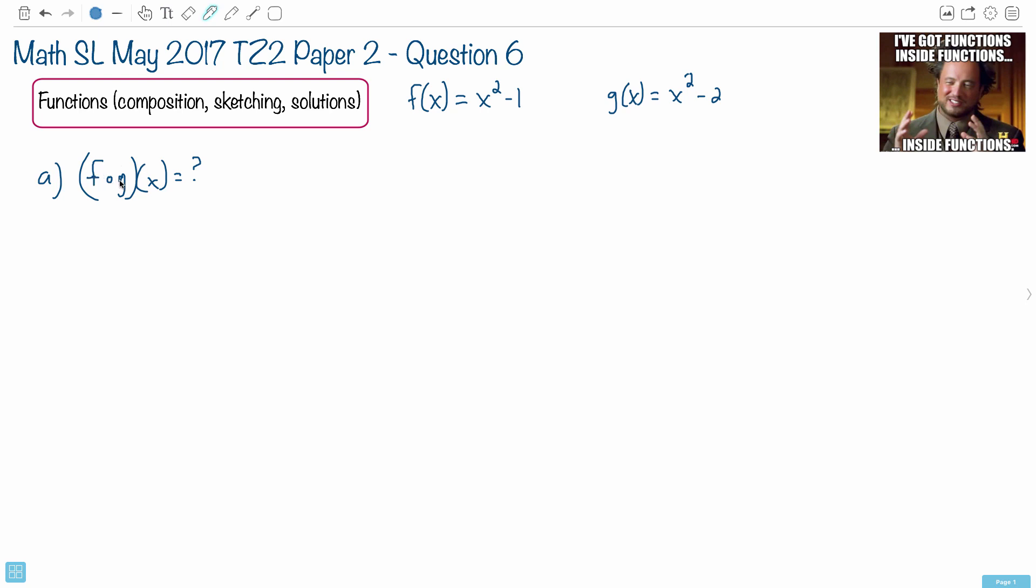If you look at this notation, what they're looking for, it looks like fog, but it's not. The way this is supposed to be is, if you know your functions and composition of functions, this means f of g of x.